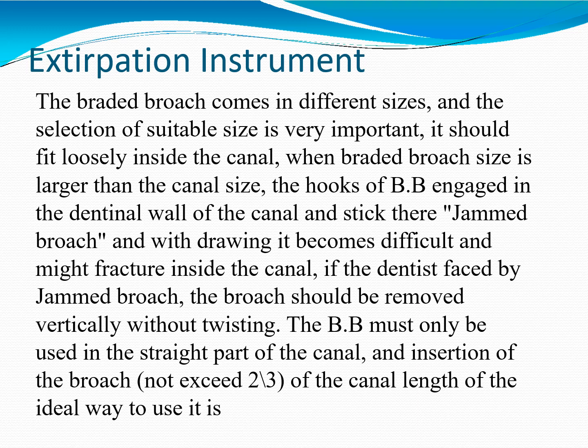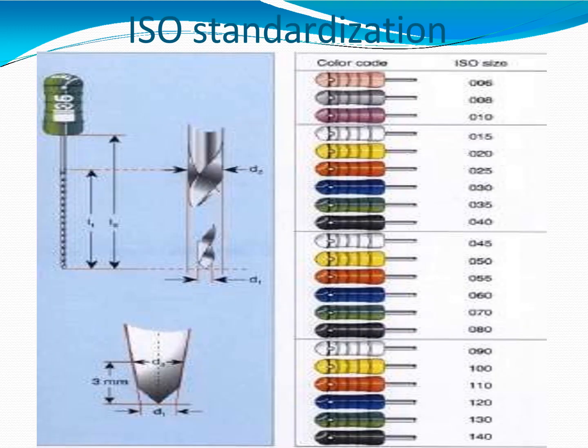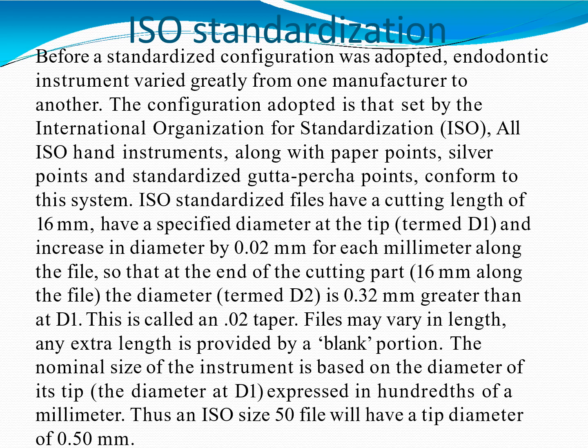If the barbed broach size is larger than the canal size, the hooks become engaged in the dentinal wall of the canal and stick there, causing the broach to jam, making withdrawal difficult and potentially causing fracture inside the canal. If the dentist faces a jammed broach, it should be removed vertically without twisting. The broach must only be used in the straight part of the canal, and insertion should not exceed two-thirds of the canal length.